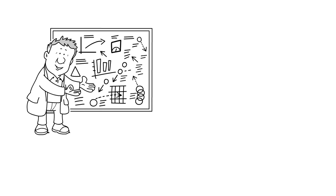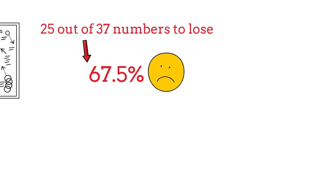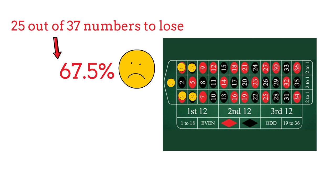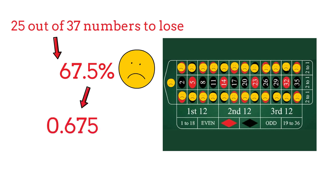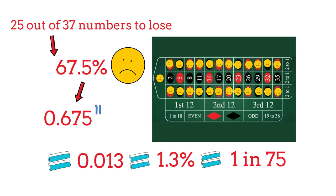Betting on a column gives us 12 out of 37 numbers to win, meaning that we have 25 out of 37 numbers that make us lose. As a percentage, this is 67.5%, so there's a 67.5% chance every spin that the ball will not land in one of our 12 winning numbers. What's the probability of the ball not landing in one of our 12 winning numbers 11 times in a row? To calculate this, we need to change our 67.5% into a decimal, which is 0.675, and multiply to the power of 11. The answer is 0.013, which as a percentage is 1.3%. In other words, there is a 1 in 75 chance we're going to lose 11 bets in a row and lose all of our money following this strategy.